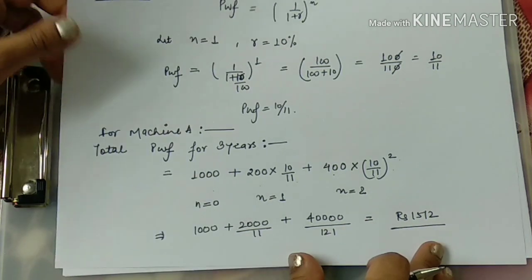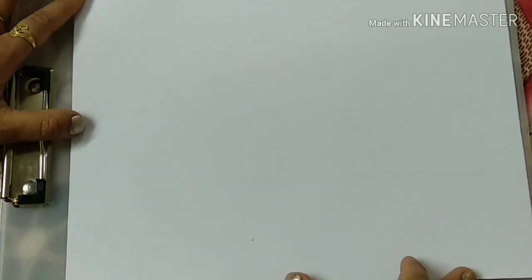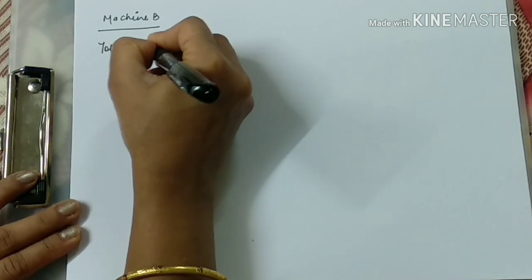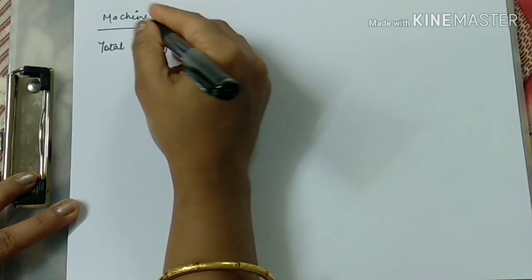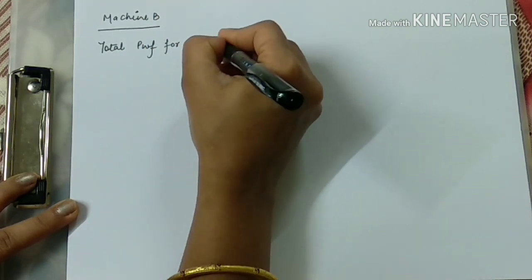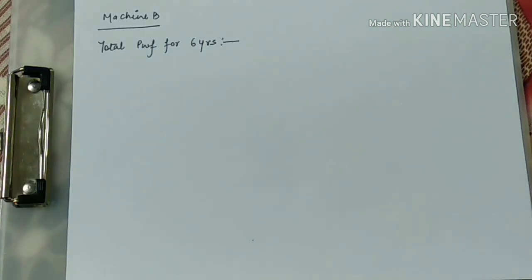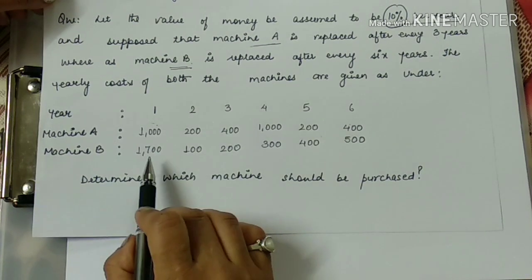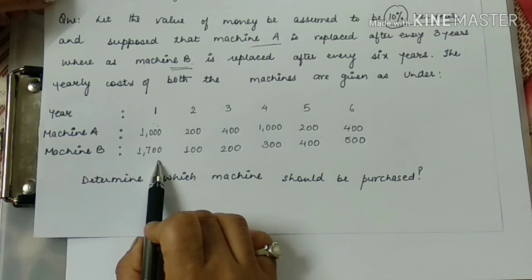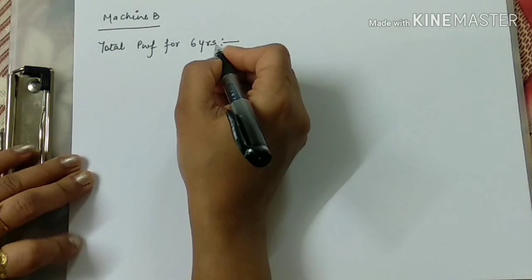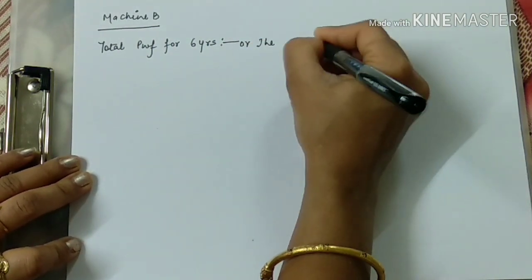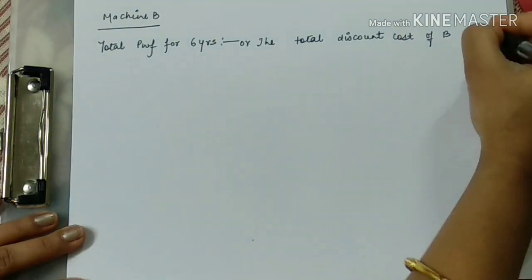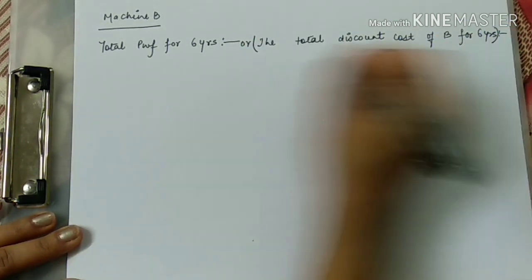So 1512 is the total present worth factor for machine A. Now we will calculate the total present worth factor — or total discounted cost — for machine B for 6 years, since machine B is replaced after every six years. The cost values for B over 6 years are given starting with 1700 rupees.